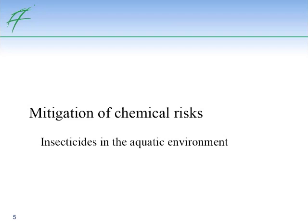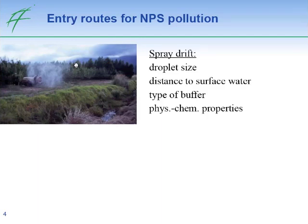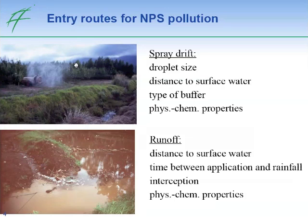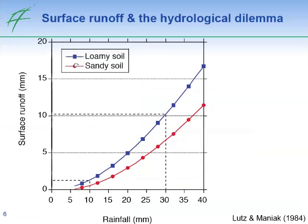We examined mitigation of chemical risks using insecticides in the aquatic environment as an example. There are two main entry routes: spray drift and runoff, and both depend on a variety of parameters. Both are important in the Lourens River catchment, but mainly runoff leads to very high concentrations, as discussed in the talk on exposure. Looking more closely at runoff, there is one very important thing to note: a kind of hydrological dilemma.